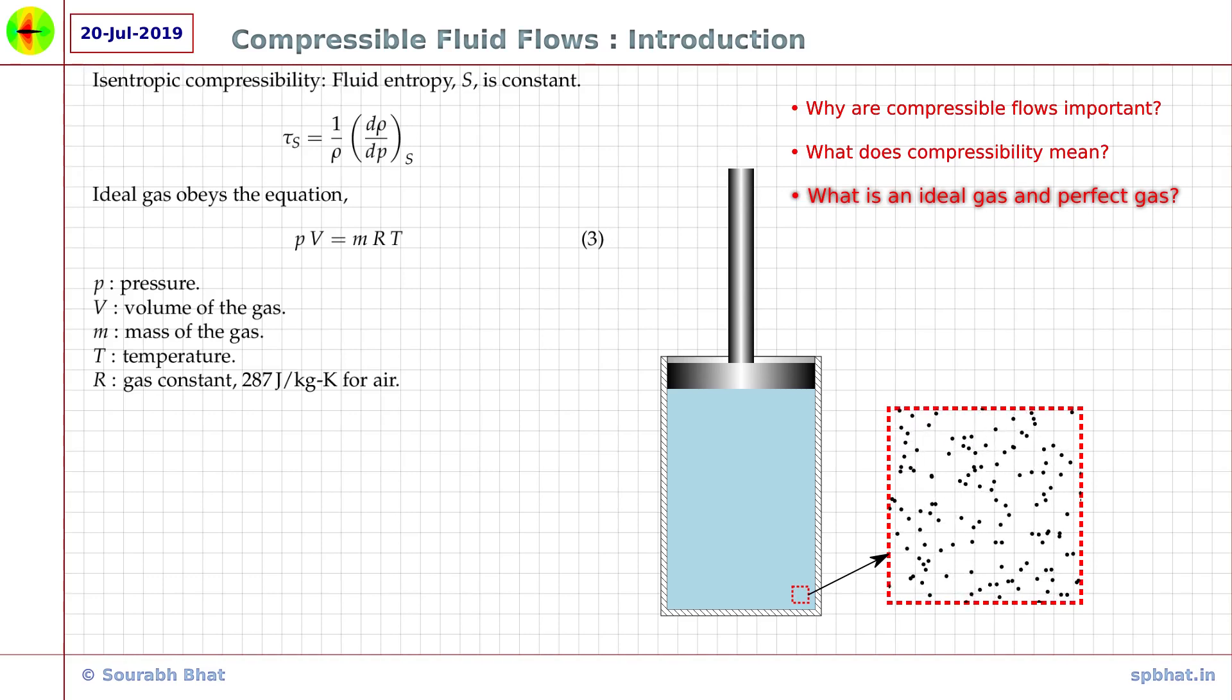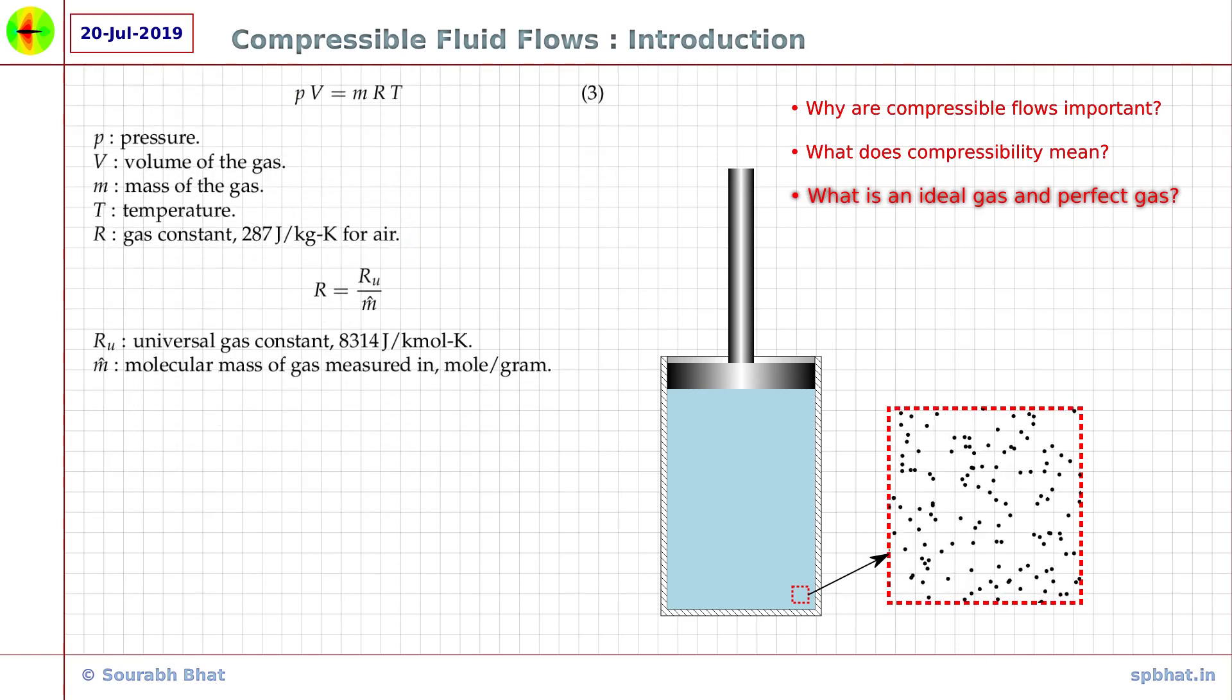R is the gas constant which is equal to 287 joules per kg Kelvin for air. For an arbitrary gas, the gas constant R can be calculated as R is equal to Ru divided by m hat, where Ru is the universal gas constant and is equal to 8314 joules per kilomole Kelvin and m hat is the molecular mass of the gas in moles per gram. The above equation can be applied to a large region of gas with constant temperature. But if we want to calculate quantities at any given point in the gas, we can divide the above equation by the volume V to obtain the equation P is equal to rho RT, where rho is the density given by m by V.